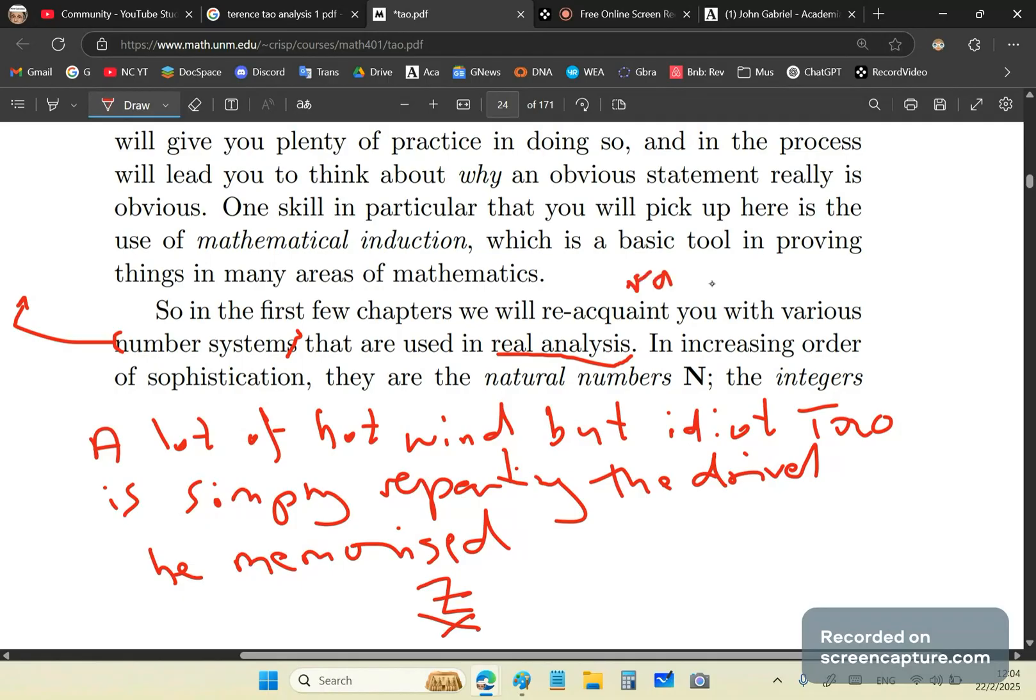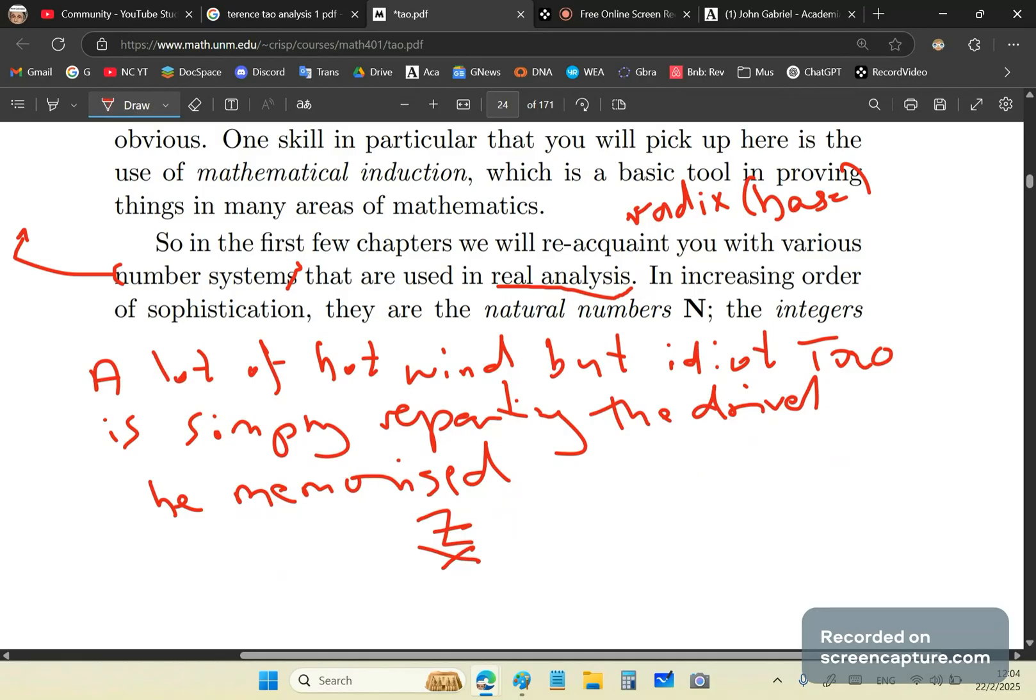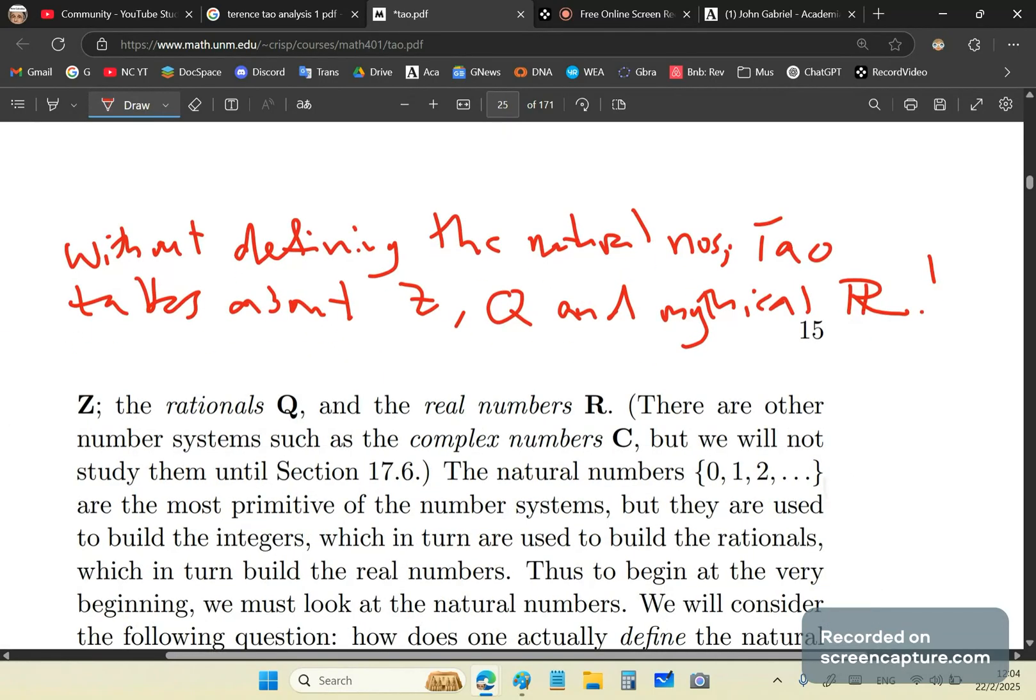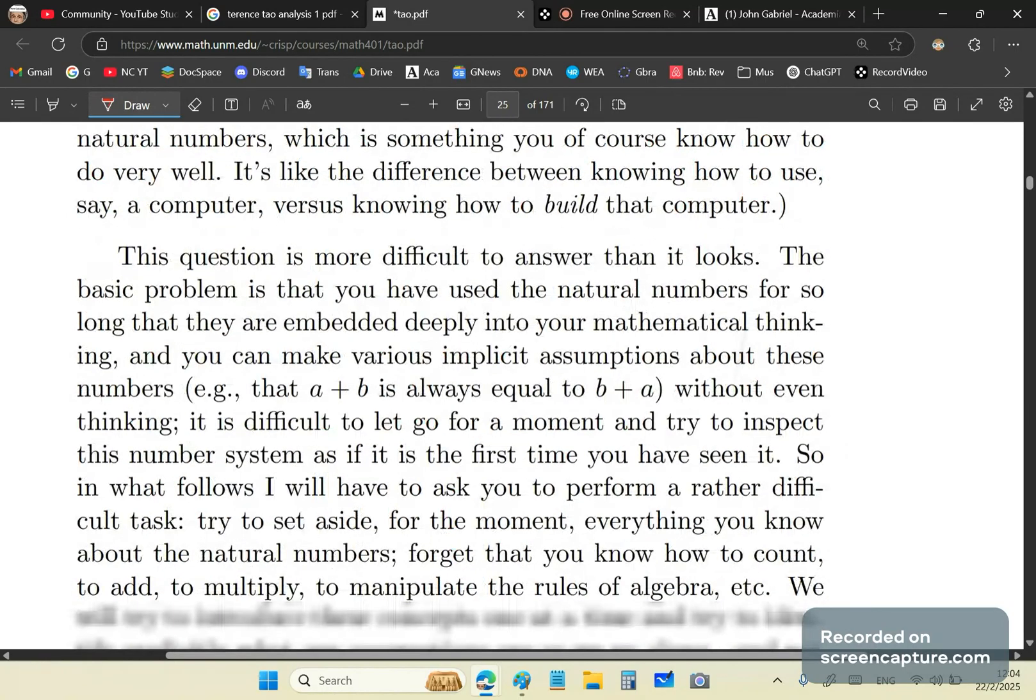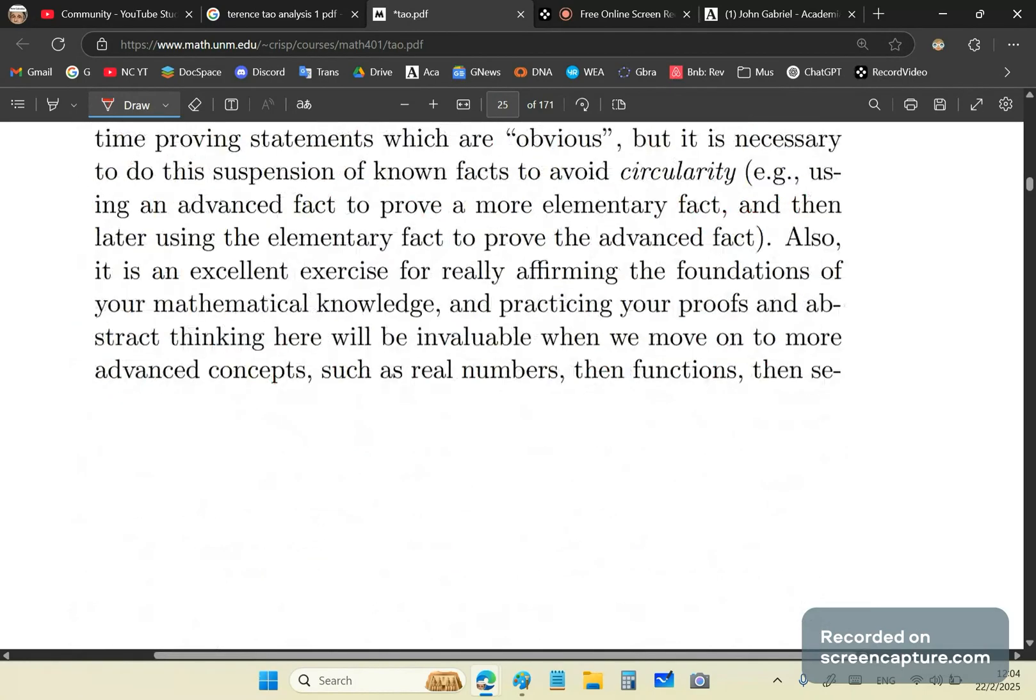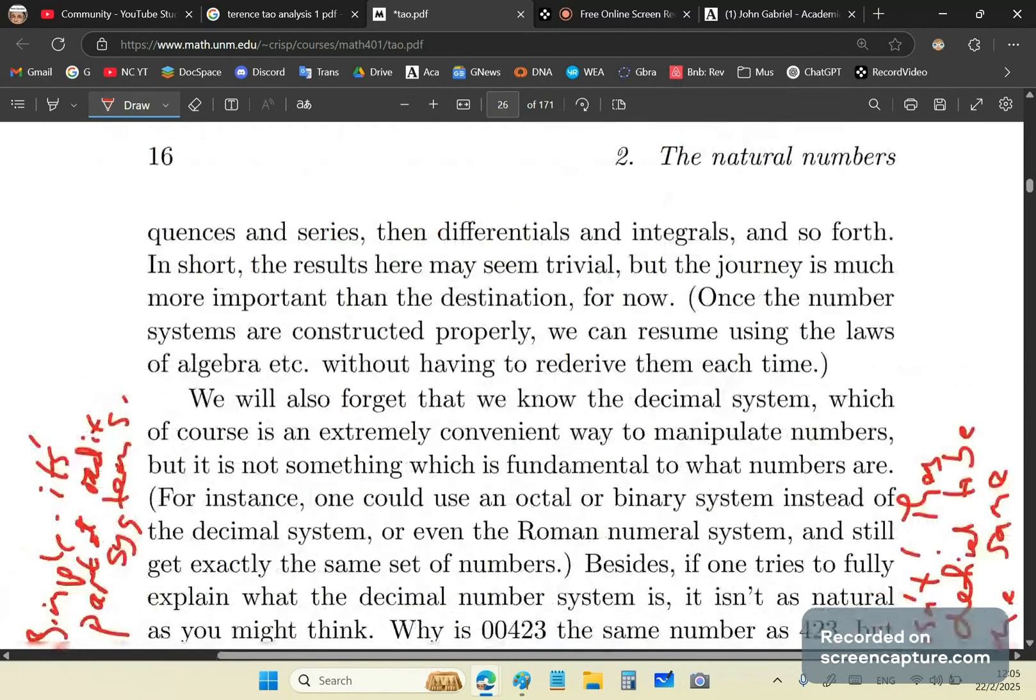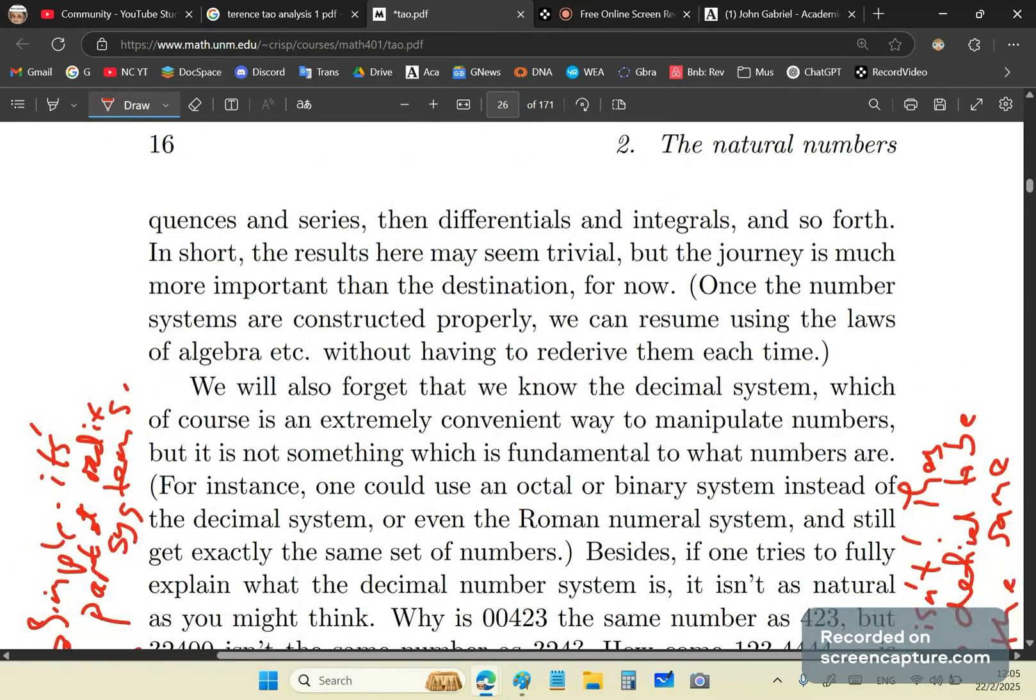It could be base 10. It could be base 60. It could be base 100. It doesn't give a crap what base it is. Radix is the same as base. Now, idiot Tao continues, but a lot of it is just hot wind, and he's simply repeating the drivel he memorized. So he says, in increasing order of sophistication, there are the natural numbers and the integers. So without actually explaining, without defining anything, he just starts talking about integers, rational numbers, and the mythical real numbers. So you can read this here and see how he waffles endlessly. Little Chinese moron knew how to be a good little parrot. And I've taught many brilliant Chinese, by the way. There are good parrots. I hate to say that some of them are smart, but a lot of them are good parrots.